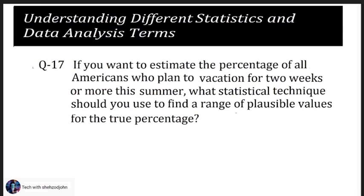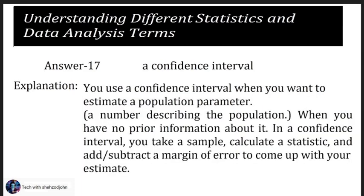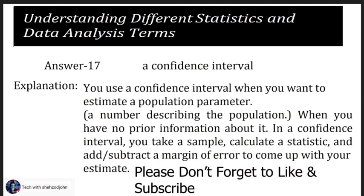Question 17: If you want to estimate the percentage of all Americans who plan to vacation for two weeks or more this summer, what statistical technique should you use to find a range of plausible values? The answer is: a confidence interval. You use a confidence interval when you want to estimate a population parameter — a number describing the population — when you have no prior information about it. In a confidence interval, you take a sample, calculate a statistic, and add or subtract a margin of error to come up with your estimate.